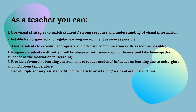If you have a role as a teacher, you can: one, use visual strategies to match students' strong response and understanding of visual information; two, establish an organized and regular learning environment as soon as possible; three, assist students to establish appropriate and effective communication skills; four, recognize that students with autism may be obsessed with specific themes and use that as motivation for learning; five, provide a favorable learning environment to reduce influence from noise, glare, and high room temperature; and six, use multiple sensory assistance, as students learn better without long series of oral instructions.